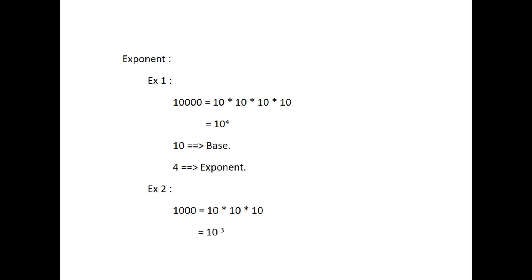Here, 10 to the power 4 stands for the product of 10,000. Here, 10 is called the base and 4 the exponent. It can be read as 10 raised to the power of 4 or simply as the 4th power of 10. 10 to the power 4 is called the exponential form of 10,000.